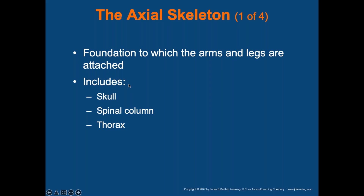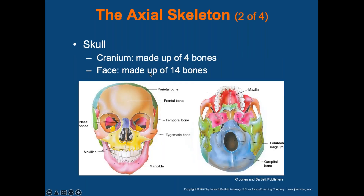The axial skeleton — the foundation to which arms and legs are attached — includes the skull, spinal column, and thorax. The skull has a cranium made up of four bones, and the face is made up of 14 bones. The cranium protects the brain and connects to the spinal cord through a large opening at the base.